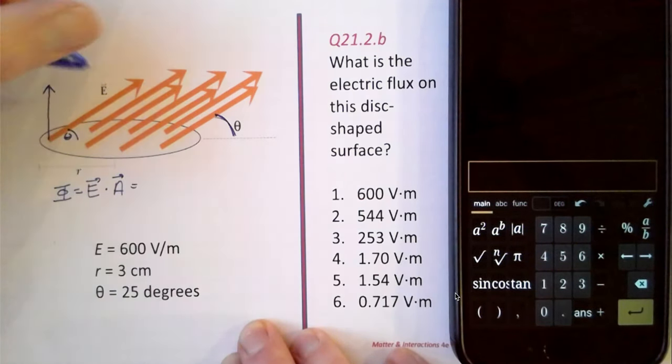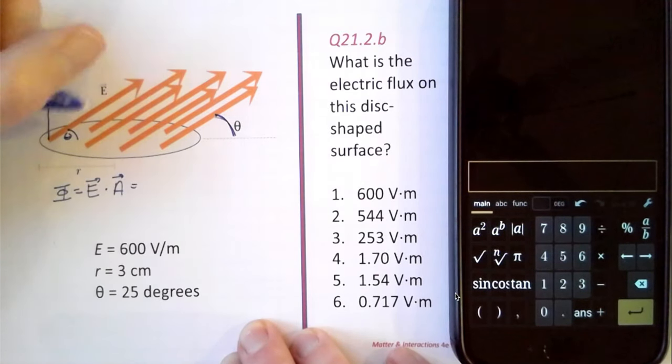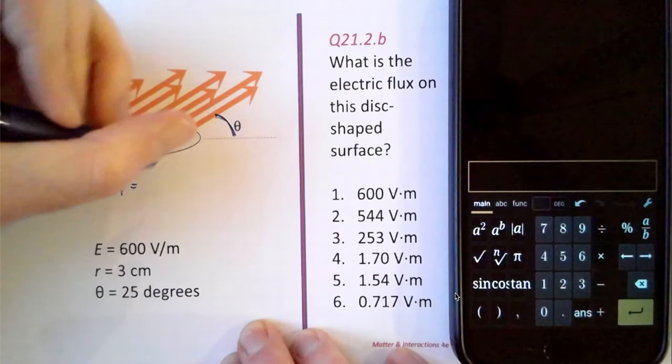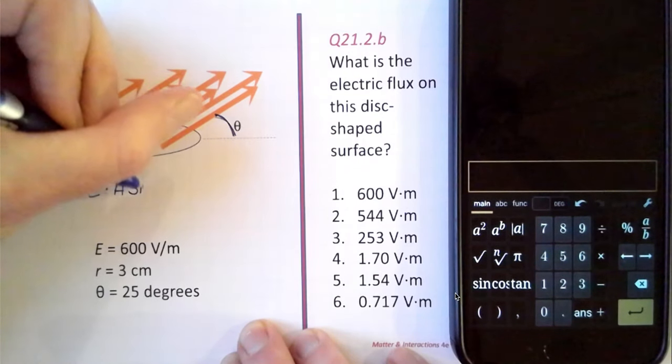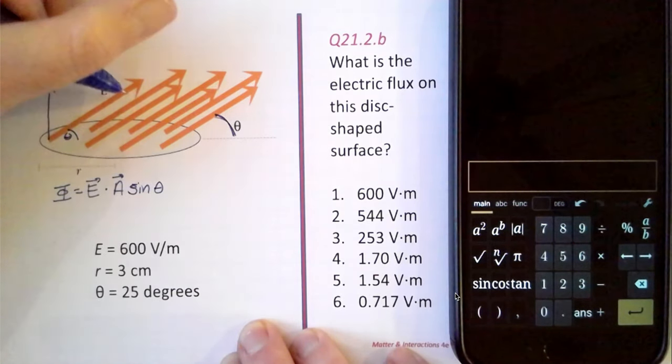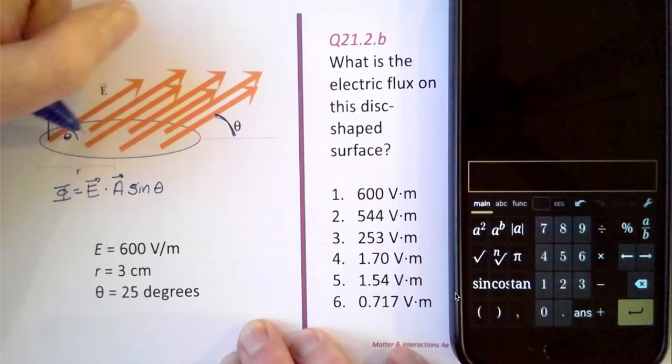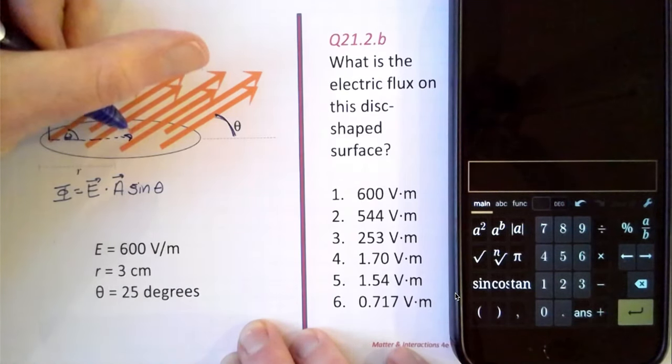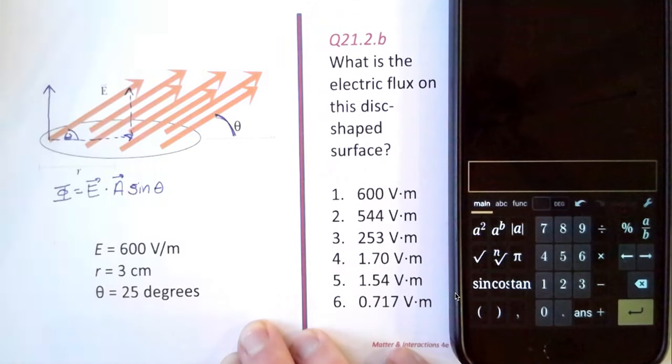That means that we want the sine of the angle. Because the sine of that angle is going to give us the vertical component of the electric field. If you think about this, you have your horizontal component and your vertical component.